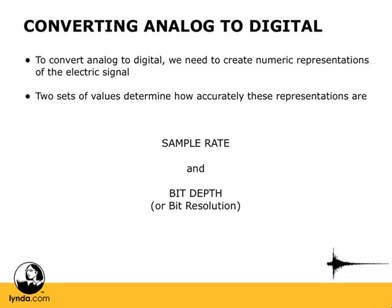The process of converting analog to digital is one of the most important processes when it comes to working with digital audio, and it's important to understand what goes into it because you'll be making decisions about how analog is converted to digital in a lot of different situations. To be able to take sound and use it in the computer or in the digital domain, we need to come up with numeric representations of those analog signals or electric signals that are moving through our cables and wires.